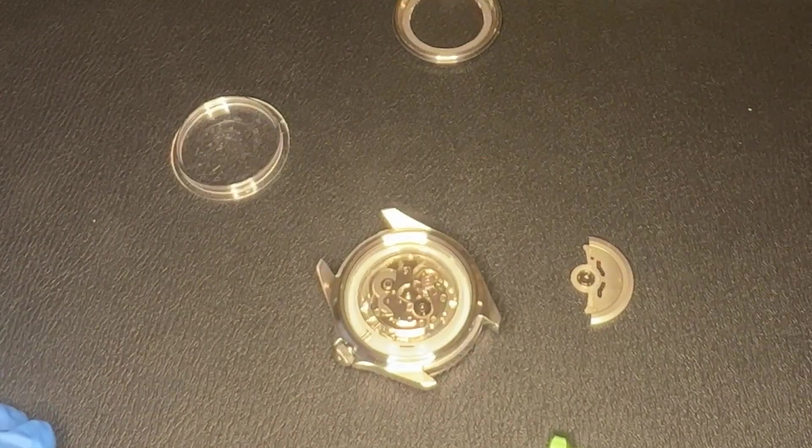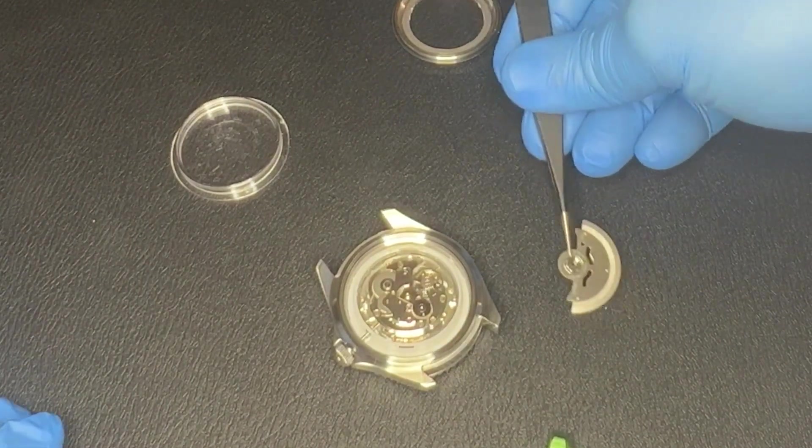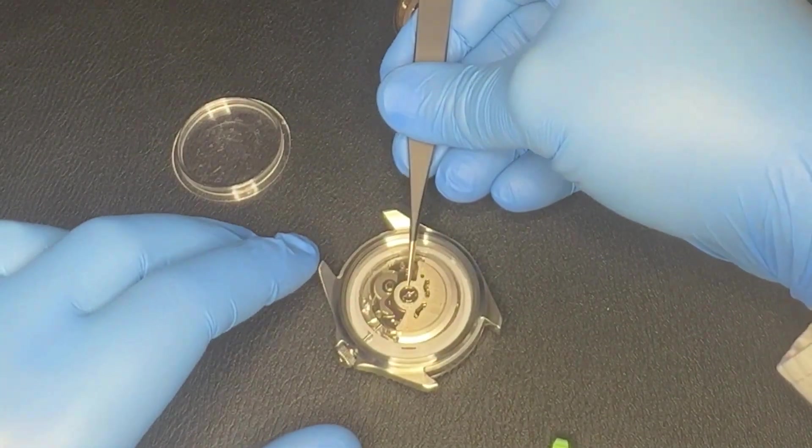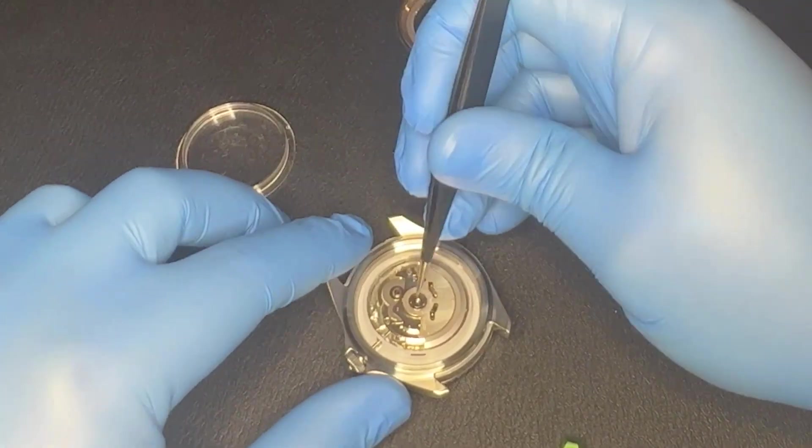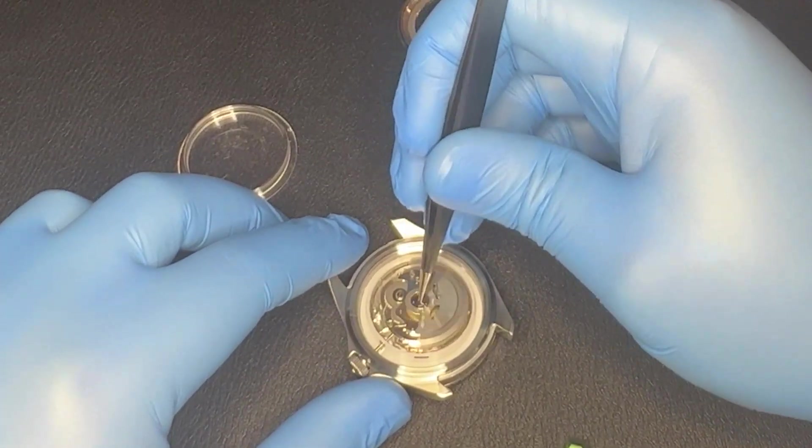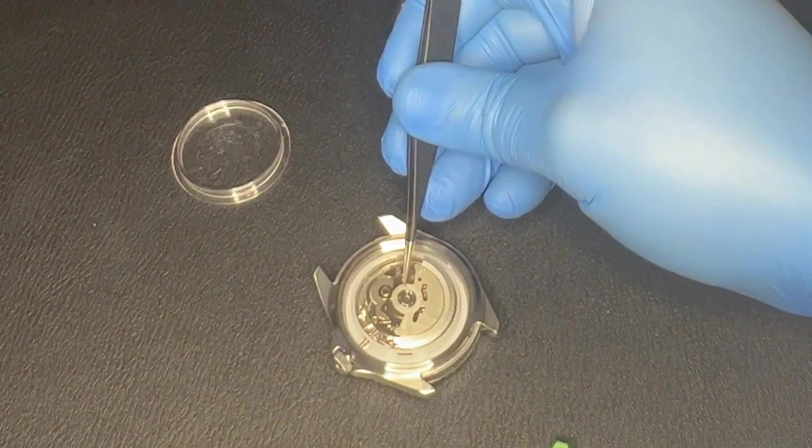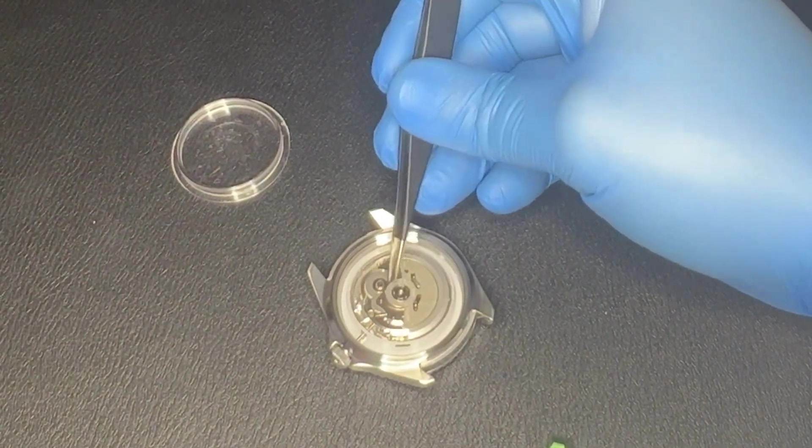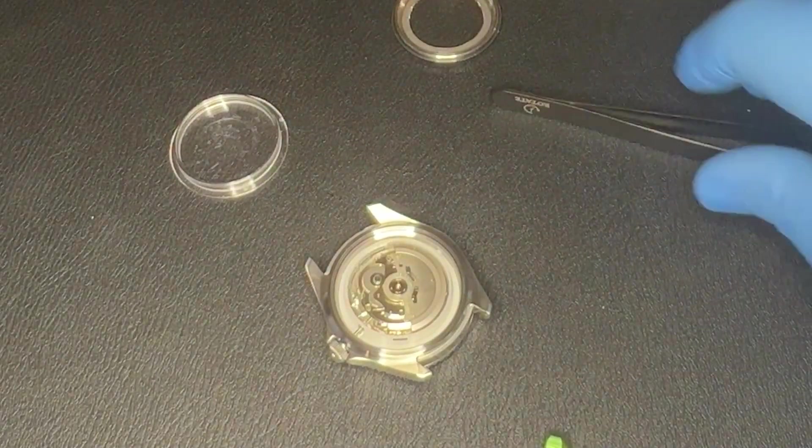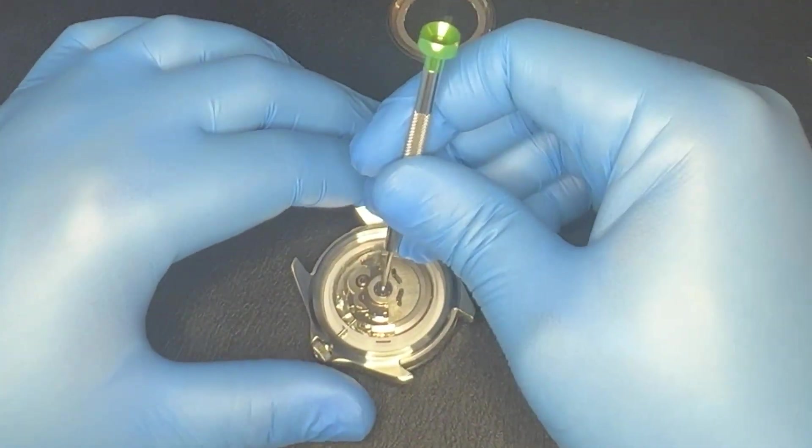Then we carefully take this pendulum. It has to line up with the center perfectly so that way we can get it back on. Got to make sure we don't bend it at all. Then we screw it back on to the back of the watch mechanism.